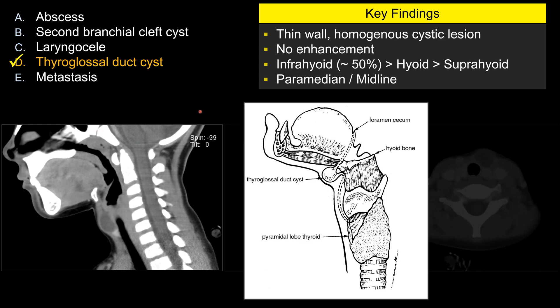Let's look briefly at the development of the thyroid gland, which helps explain thyroglossal duct cyst formation and its location. You start at the foramen cecum at the midline at the tongue base, with a small invagination of the thyroid diverticulum. A small rest of endodermal tissue penetrates through the mesoderm, following the course of the thyroglossal duct — at midline through the tongue base, in front of the hyoid and looping around the hyoid bone, then descending at midline or slightly off midline toward the thyroid cartilage.